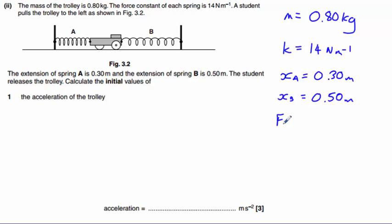So first of all, let's work out the force A, which is going to be K times XA, which is 14 times 0.3, so that is 4.2 newtons to the left.